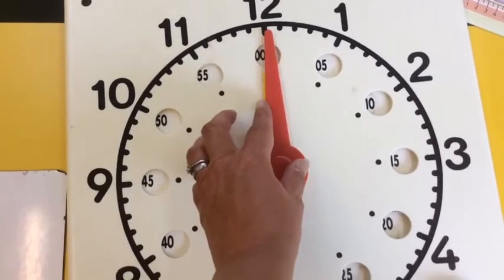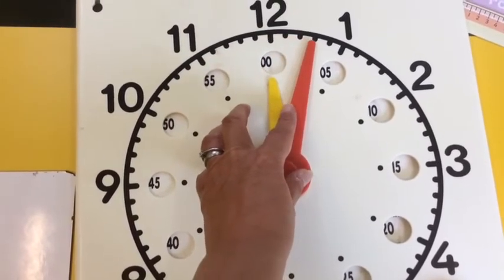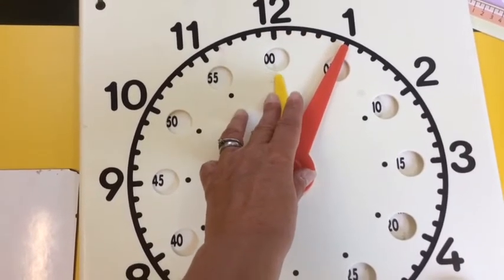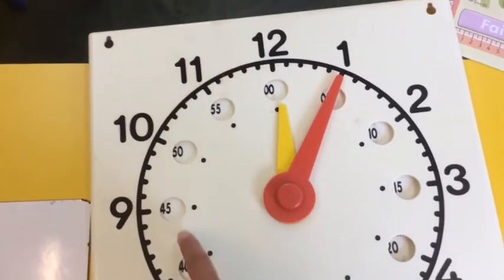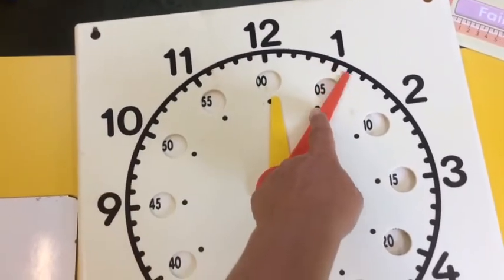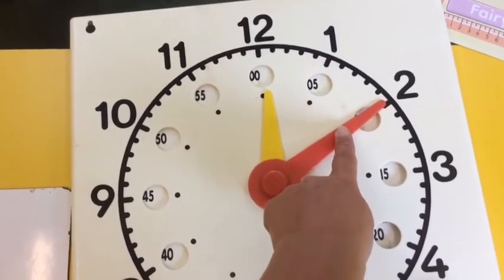Something like this. That was 12 o'clock, but 1, 2, 3, 4, 5 minutes have gone past 12 o'clock. So we say that's 5 past 12. Another 5, that would be 10 past 12, wouldn't it?